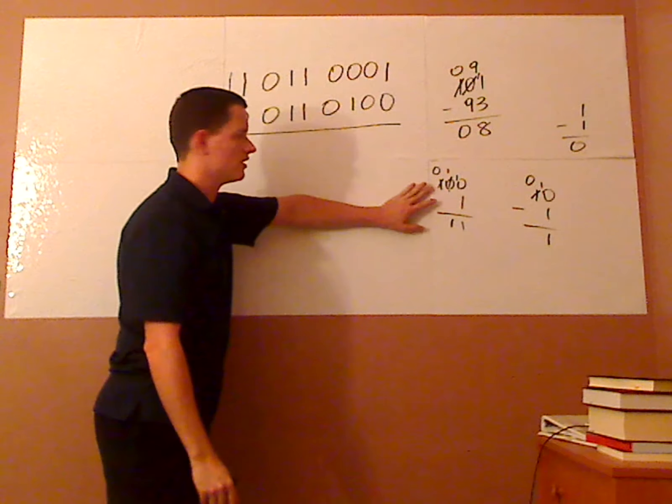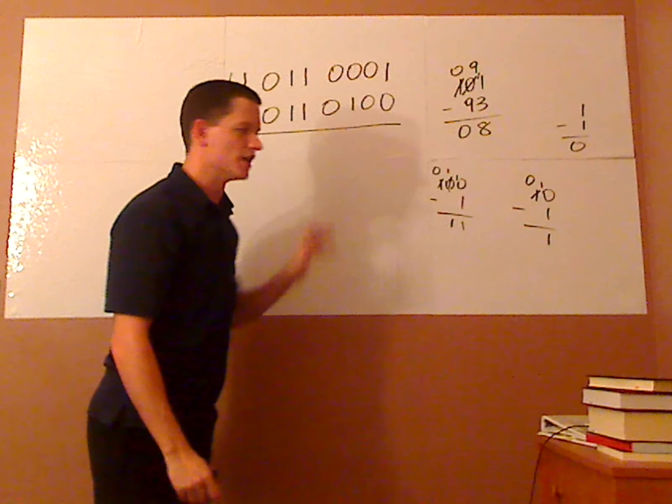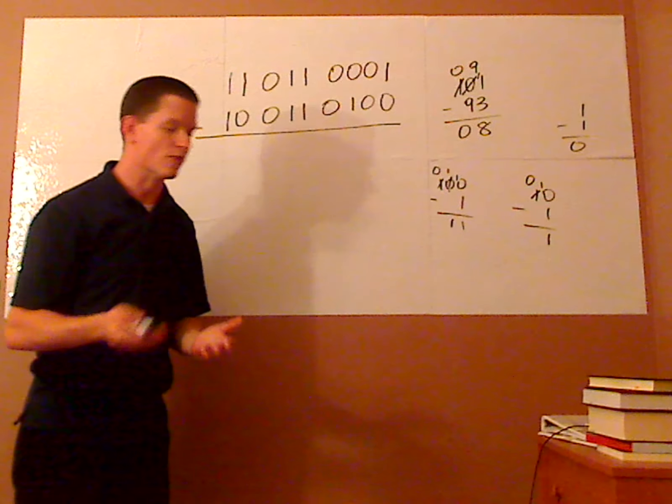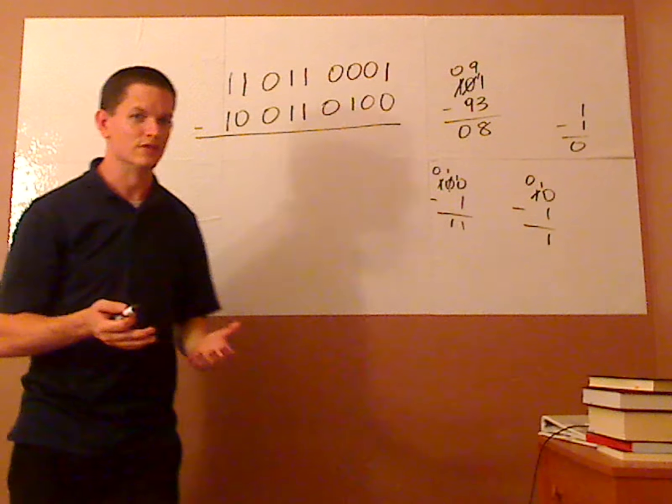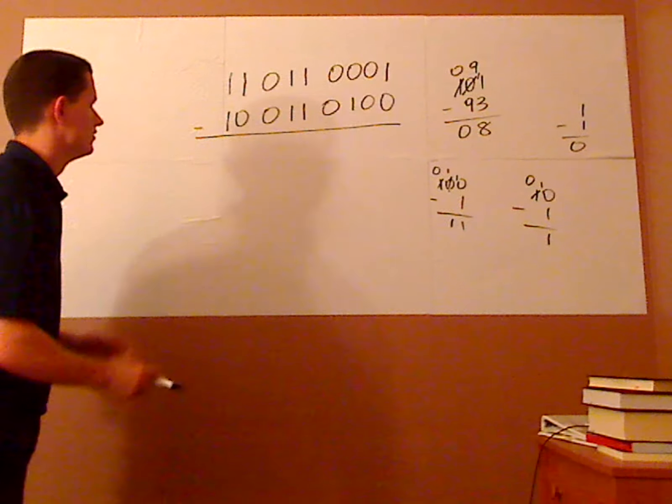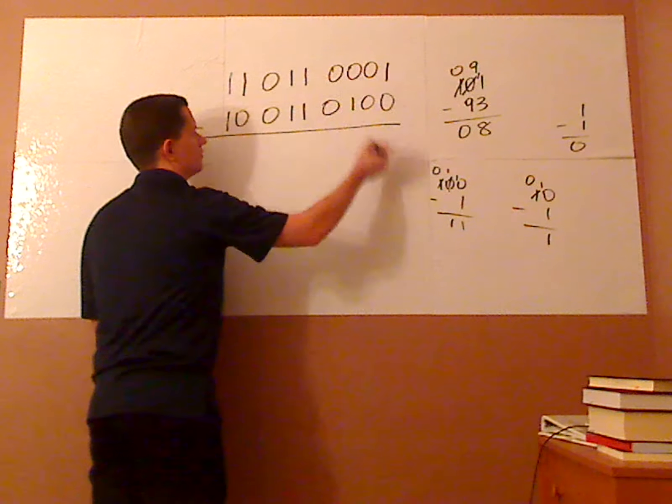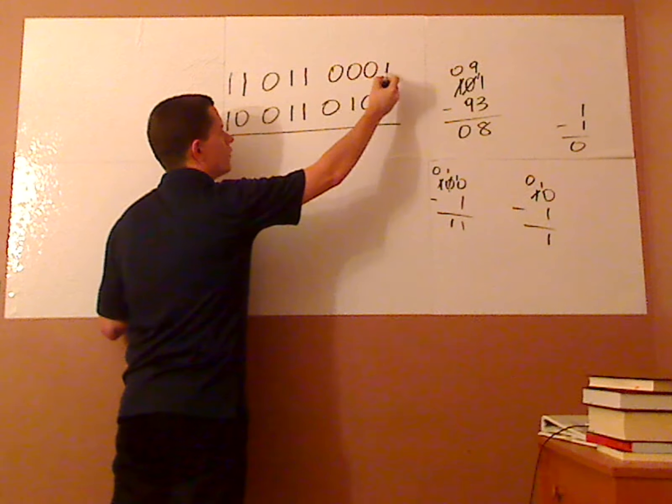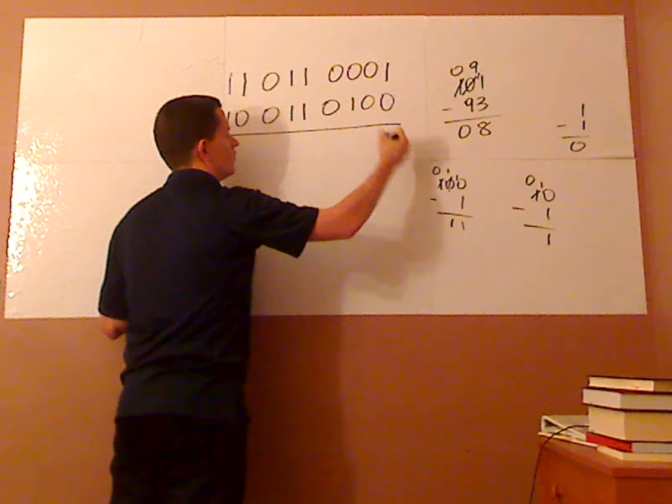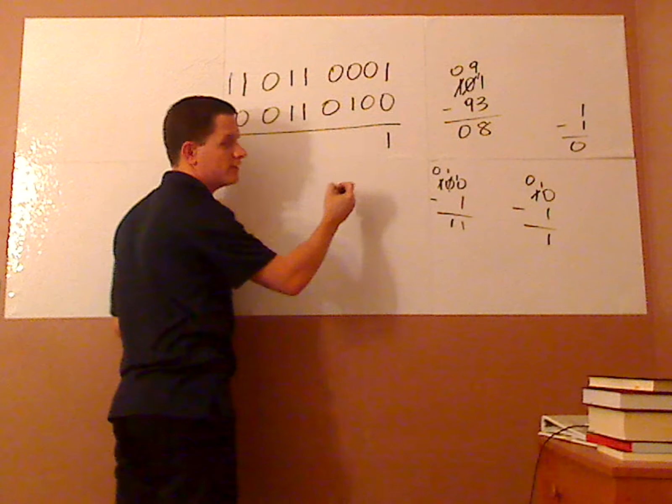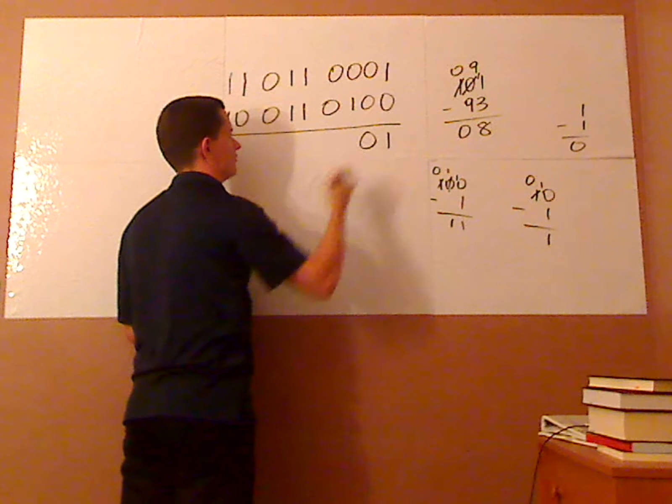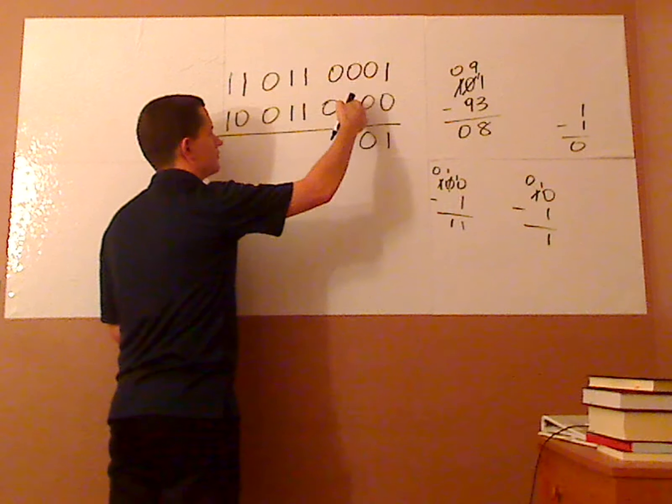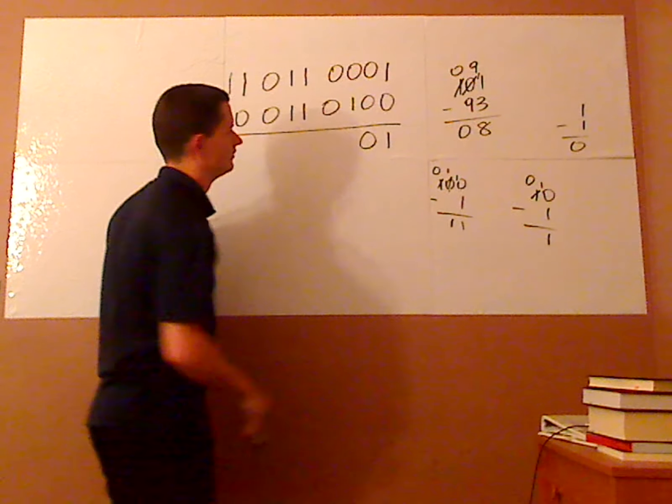So hopefully this helps, looking at these two examples, because what you're doing is you're borrowing, which in other words is regrouping. You're just transferring things over. So let's look at the example. 1 minus 0 is 1. 0 minus 0 is 0. 0 minus 1 is, uh oh, you have to borrow.